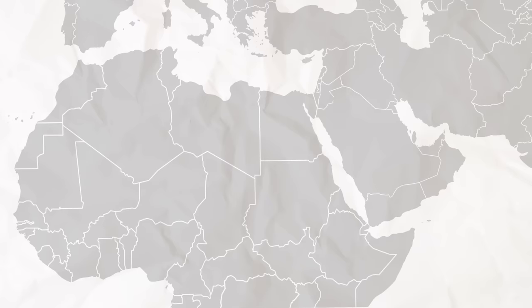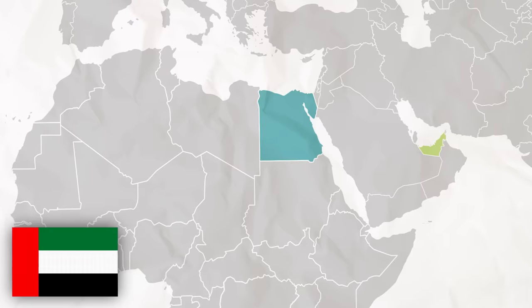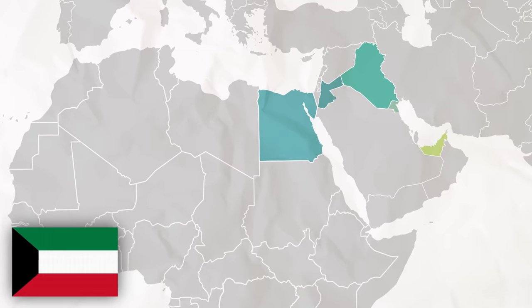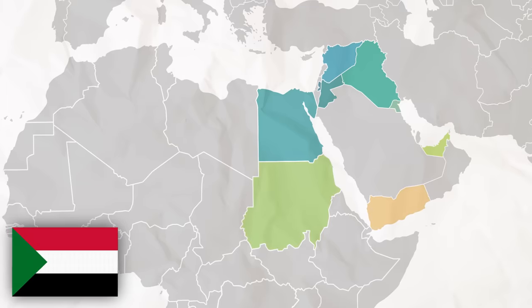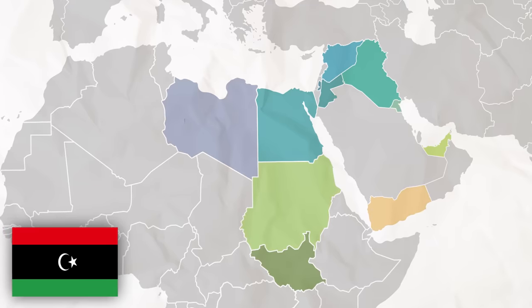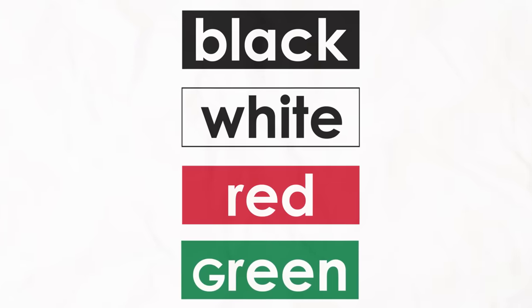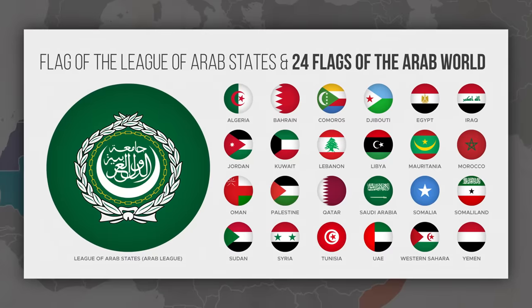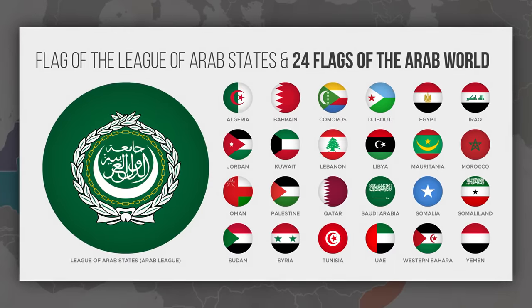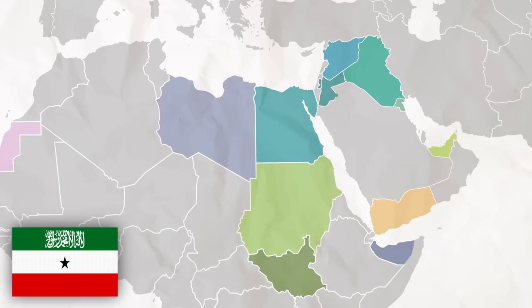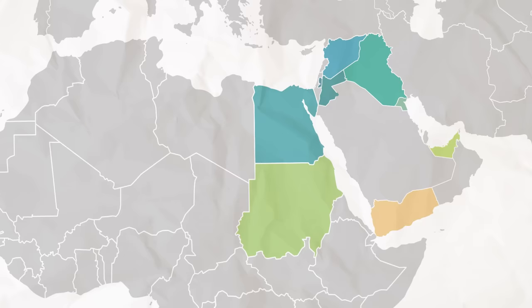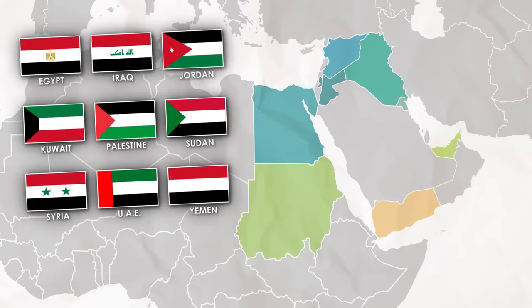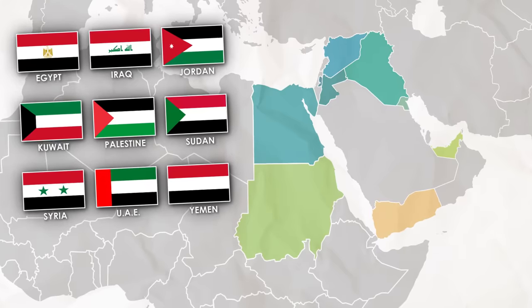The 9 countries that use them are Egypt, the UAE, Iraq, Jordan, Kuwait, Palestine, Syria, Yemen, and Sudan. Arguably, South Sudan and Libya also use them, and in fact these colors are common among almost all Arab nations. In addition, El-Sarawi and Somaliland, both unrecognized states, also use them.